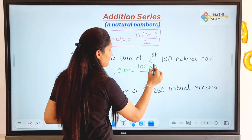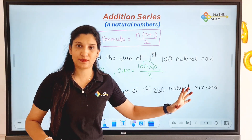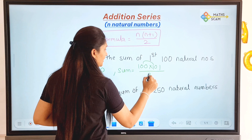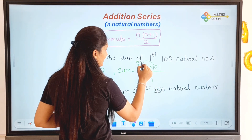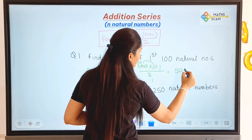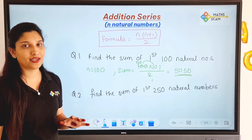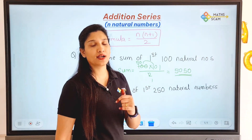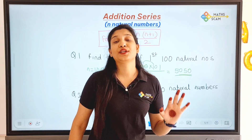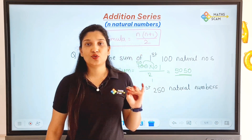Either you can do this multiplication first and then division, or you can do division first and then multiplication — that's your choice. Dividing 100 by 2 gives 50. So 50 into 101 is 5050. We have already learned the 101 trick. Please go and watch the multiplication by 101 trick. The answer is 5050.